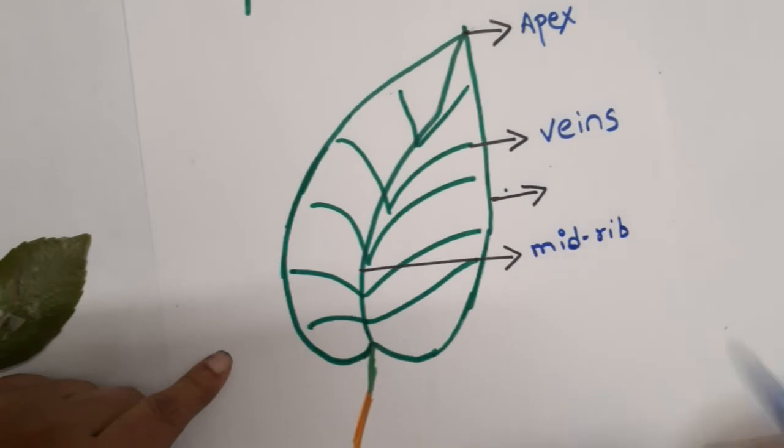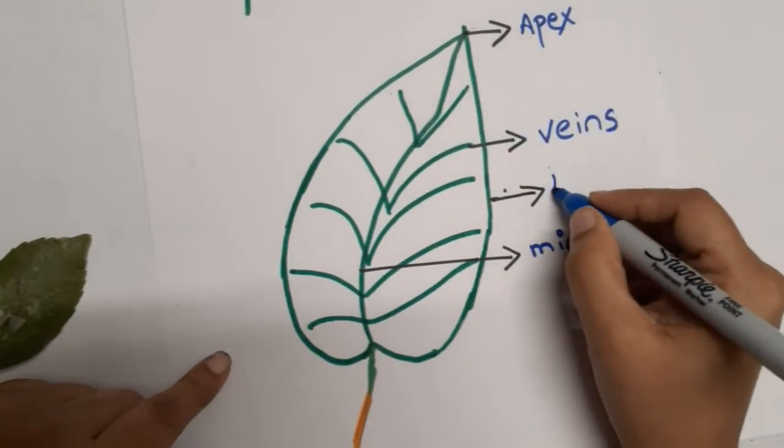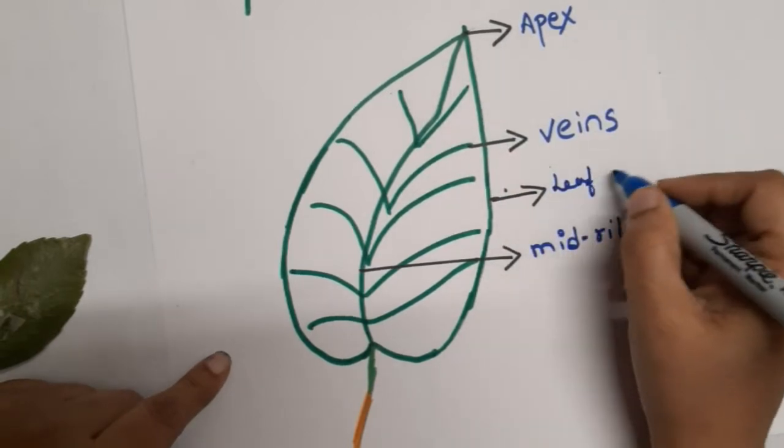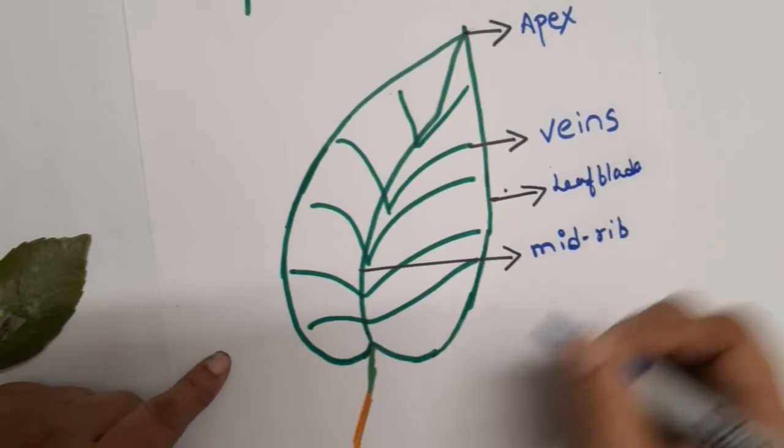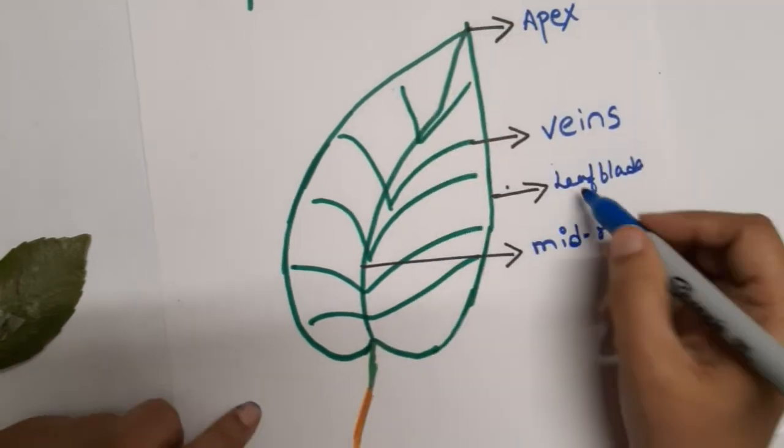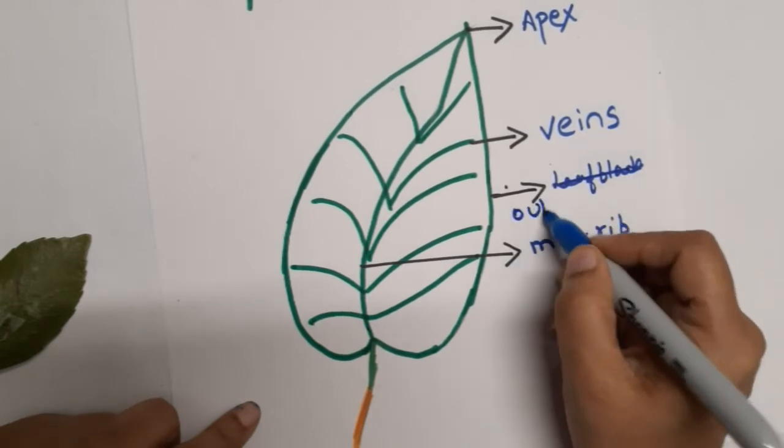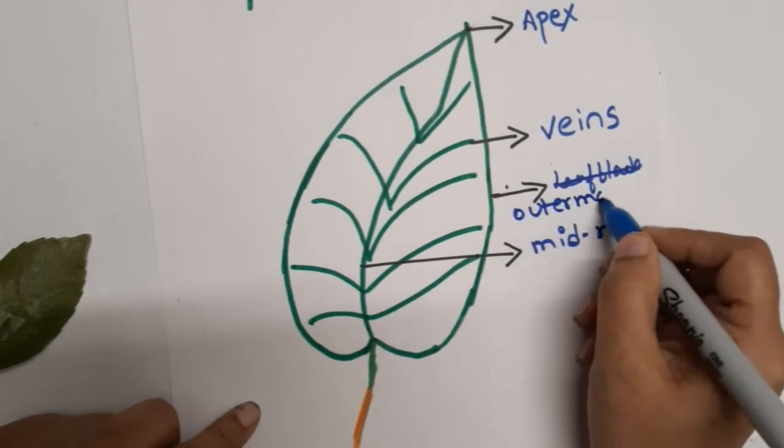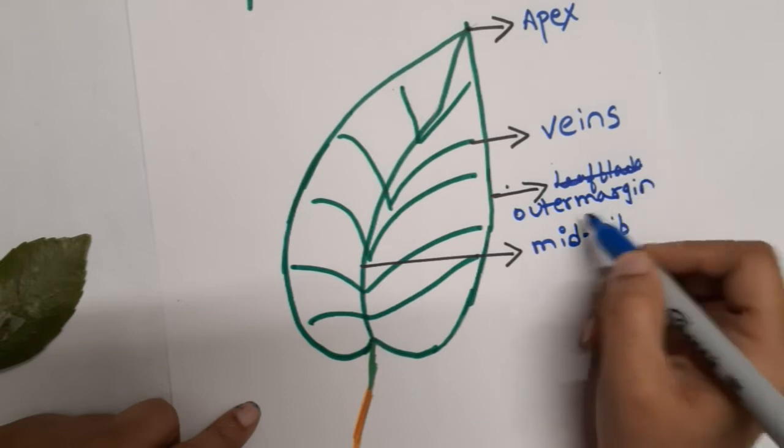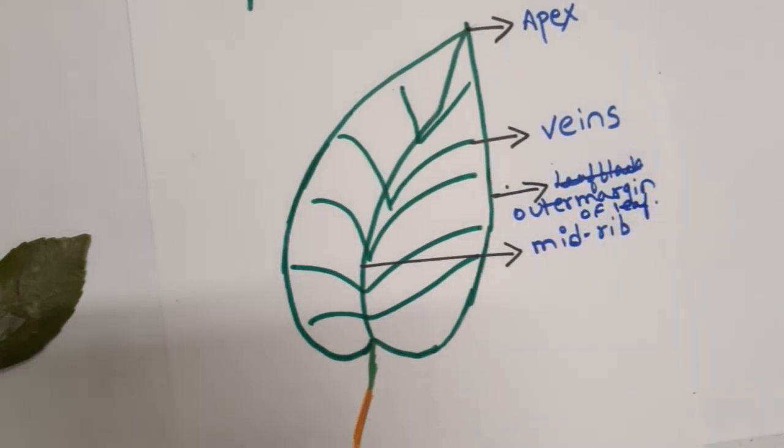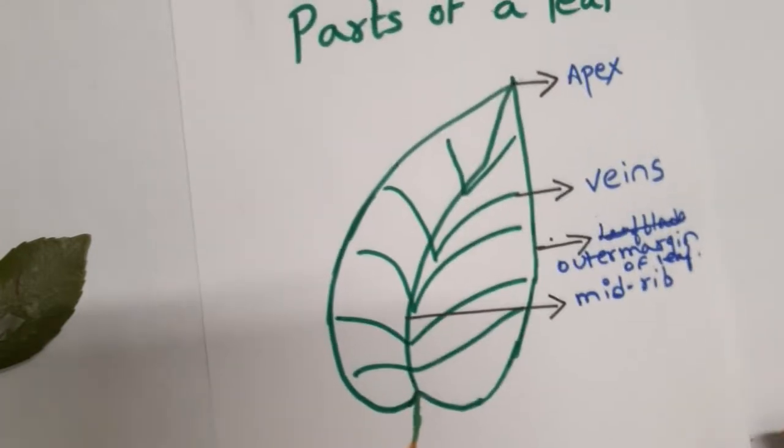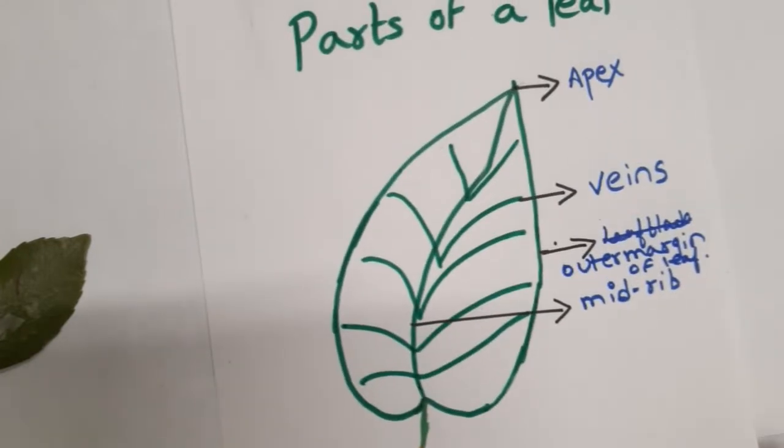This is the mid-rib, and this is the leaf blade, the outer margin of the leaf. So this is about the parts of the leaf, which is very, very important.